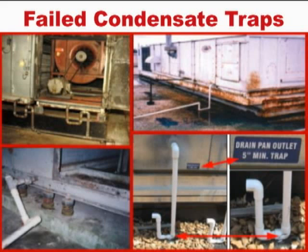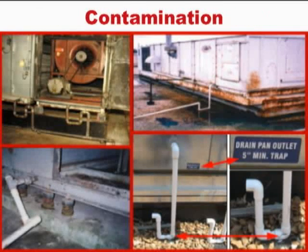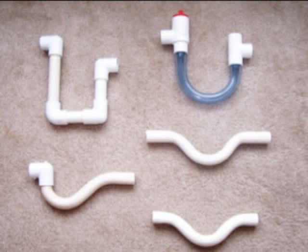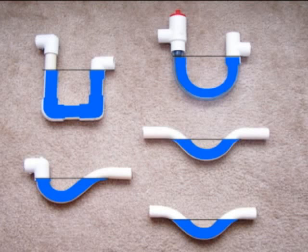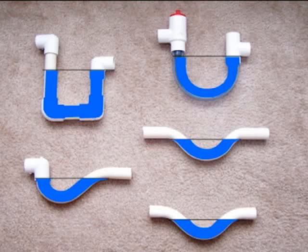For decades, air conditioners equipped with P-traps like those depicted here have been causing building owners excessive operating costs and indoor air contamination. The most commonly used condensate drain systems include P-traps like these. They use trapped water to form a drain seal and allow for condensate drainage. Although simple in concept, P-traps exhibit many failure modes that prevent reliable condensate drainage and expose surrounding areas to water damage.